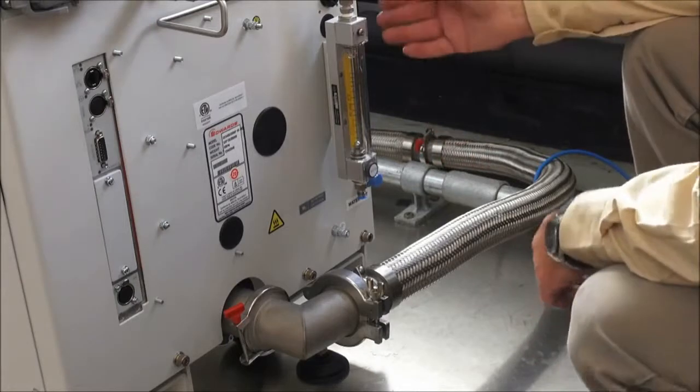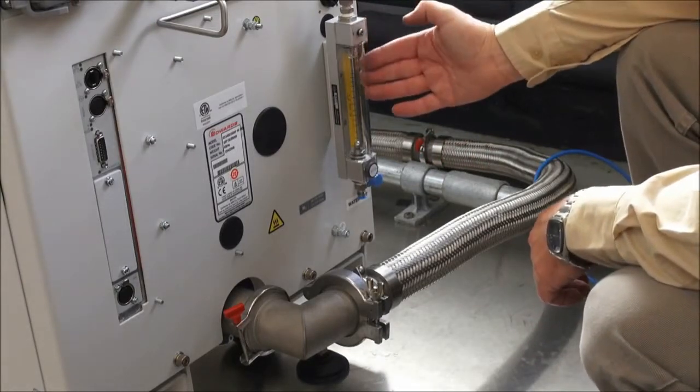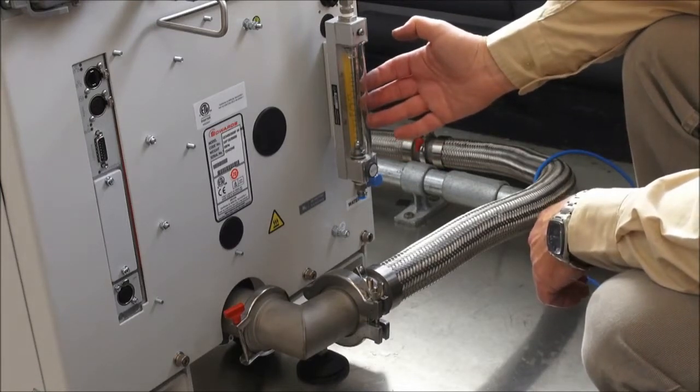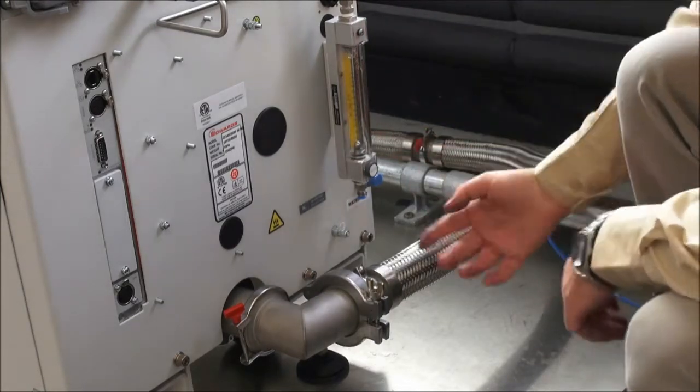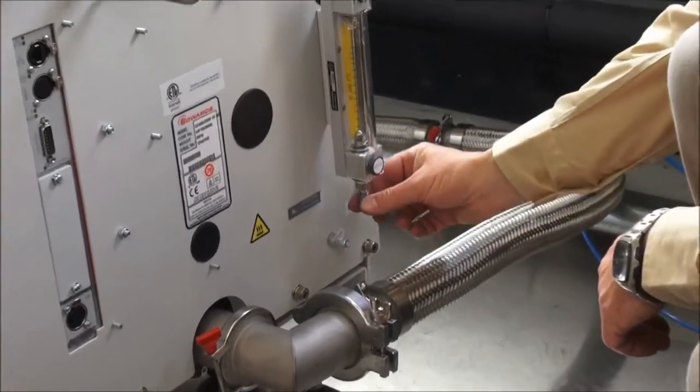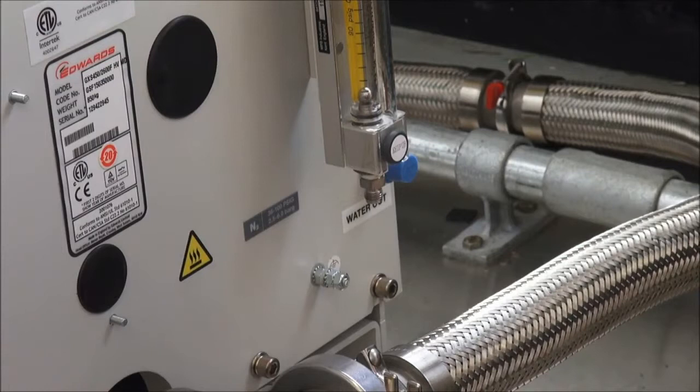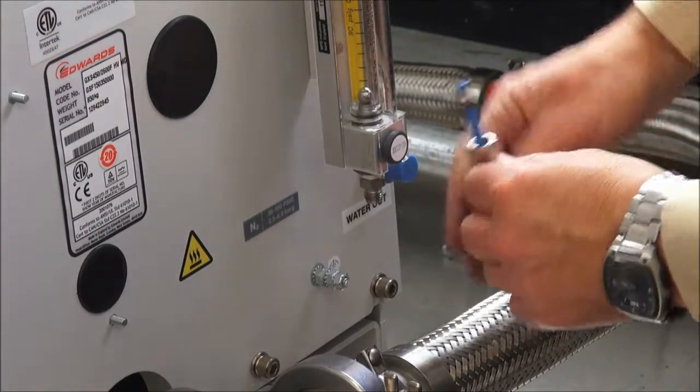Now we need to connect to the utilities supplies. There is a flow meter or rotameter at the rear of every GXS, as all GXS pumps use purge gas in varying amounts. The connector on this rotameter is a quarter inch female swage lock. Always remove the blue shipping stopper from this fitting even if your purge gas supply is not yet ready.